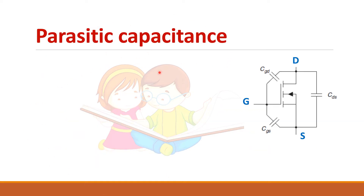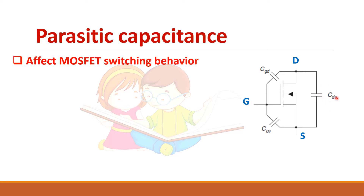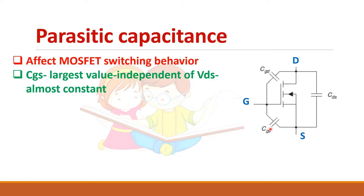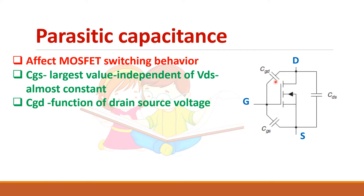The parasitic capacitances in the MOSFET structure exist between gate and source, between gate and drain, and between drain and source terminals. The gate-source capacitance has the largest value because the gate is insulated from the source by an insulator, giving a large capacitance. This value is independent of the drain-source voltage applied.